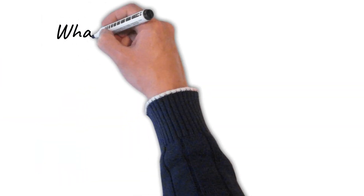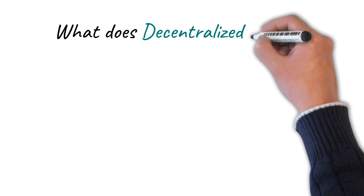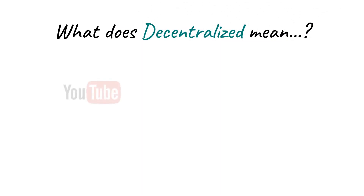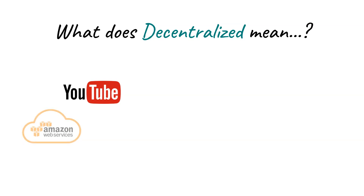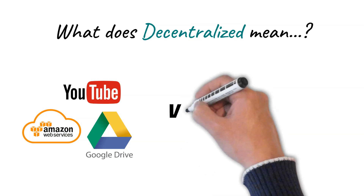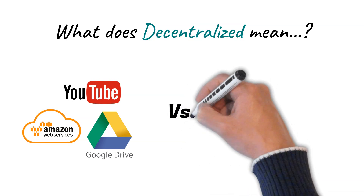What does decentralized mean and why is it important? Centralized data storage and processing facilities like YouTube, Amazon and Google have full control of your data. To use their services you are required to provide your identity, pay high fees and accept that your data may be subject to corruption, loss, piracy and censorship.